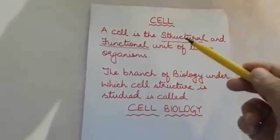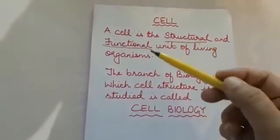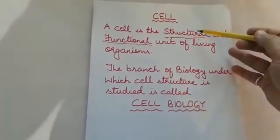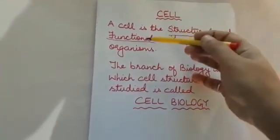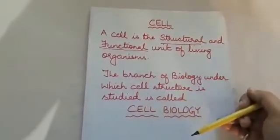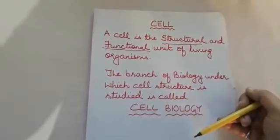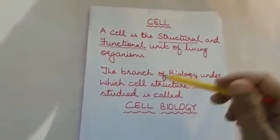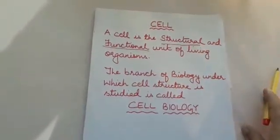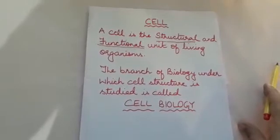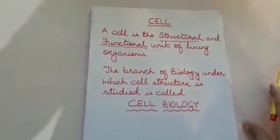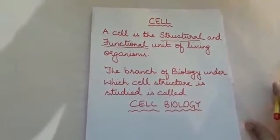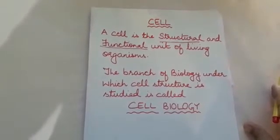A cell is defined as the structural and functional unit of living organisms. Here we need to put stress on two words: the structural unit and the functional unit. All living organisms are of two types: unicellular organisms and multicellular organisms. Unicellular organisms are composed of a single cell, but multicellular organisms are an aggregate of cells.